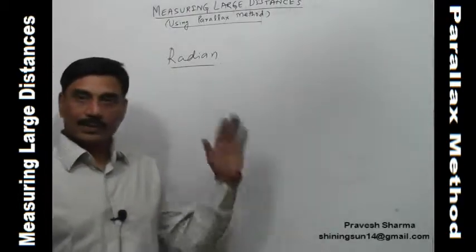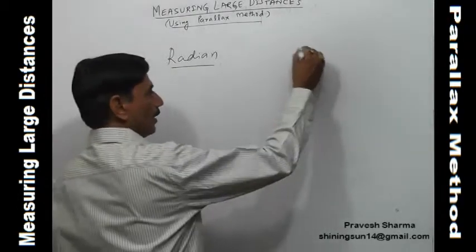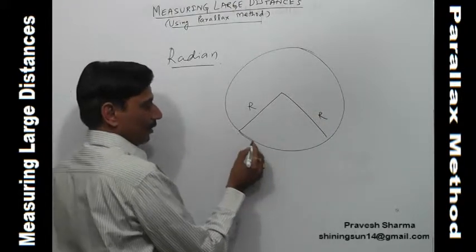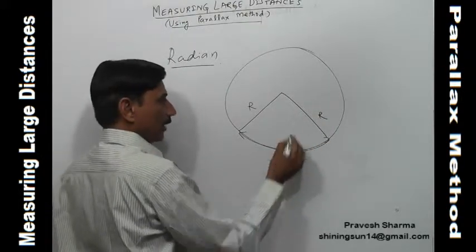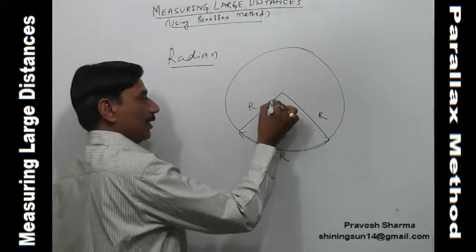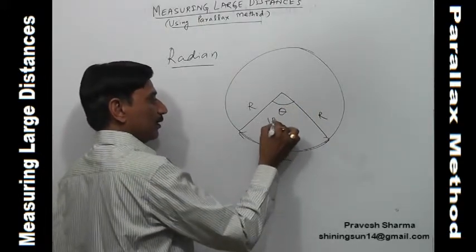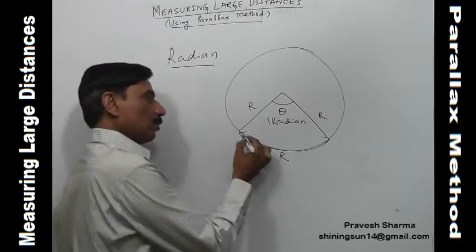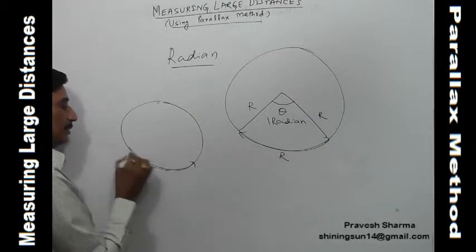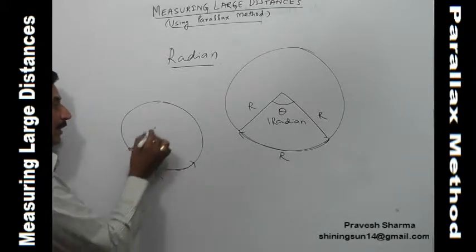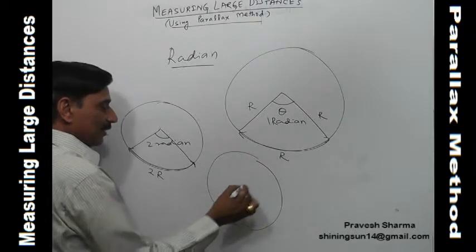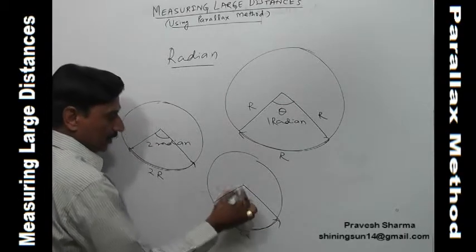Now let's understand what a radian is. One radian is defined as follows: suppose I take a circle of radius r. If the length of the arc is also equal to the radius r, then the angle subtended by this arc at the center is called one radian. If I take this length as 2r — double the radius — the angle subtended at the center will be two radians.